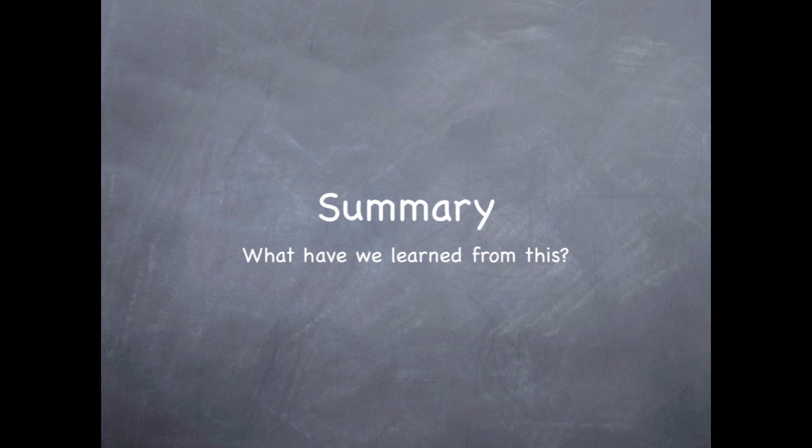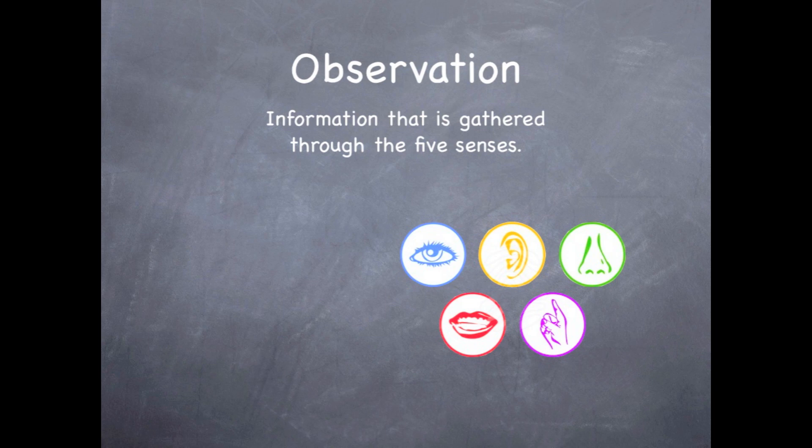So let's take a look at what we have learned from this. We learned two new vocabulary words. The first vocabulary word is observation. Observations are information that is gathered through the five senses, including sight, smell, touch, taste, and hearing.